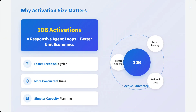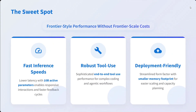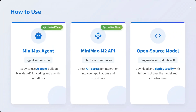Why activation size matters: 10 billion activations equals responsive agent loops and better unit economics. Faster feedback loops are present because of this smaller activation size, along with more concurrent runs and simple capacity planning. The sweet spot is fast inferencing speed, robust tool use, and deployment-friendly design. The model looks quite good and you should definitely try it out.